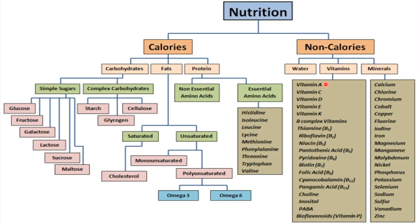The non-caloric class includes water, vitamins, and minerals. Vitamins include vitamin A, C, D, E, K, and also vitamin B, folic acid, choline, PABA, bioflavonoids, and others. Minerals include calcium, chromium, cobalt, copper, chlorine, and others. Vitamins are further classified as water-soluble vitamins and fat-soluble vitamins, which we will learn in detail in the next topic.